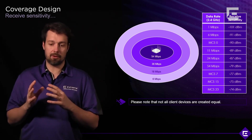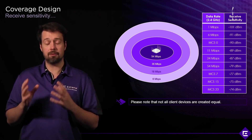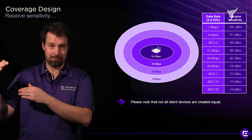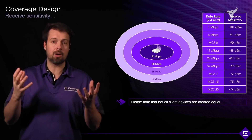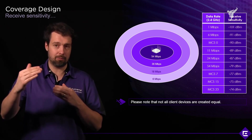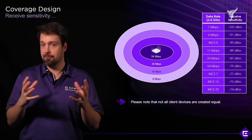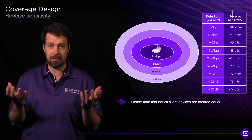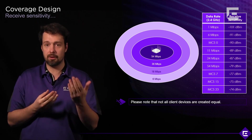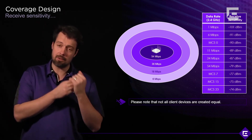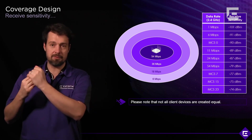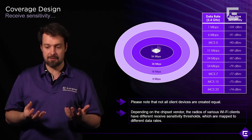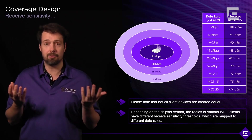Let's talk about received sensitivity. Different devices will be able to run different data rates at different RSSI levels. Generally, the stronger the signal, the better the data rate and the more data you can push through the communication channel. Different devices have different thresholds to switch between data rates depending on RSSI. Every manufacturer provides a table showing what data rate corresponds to a minimum received sensitivity or minimum RSSI, and depending on chipset vendor and device vendor, those thresholds will vary.